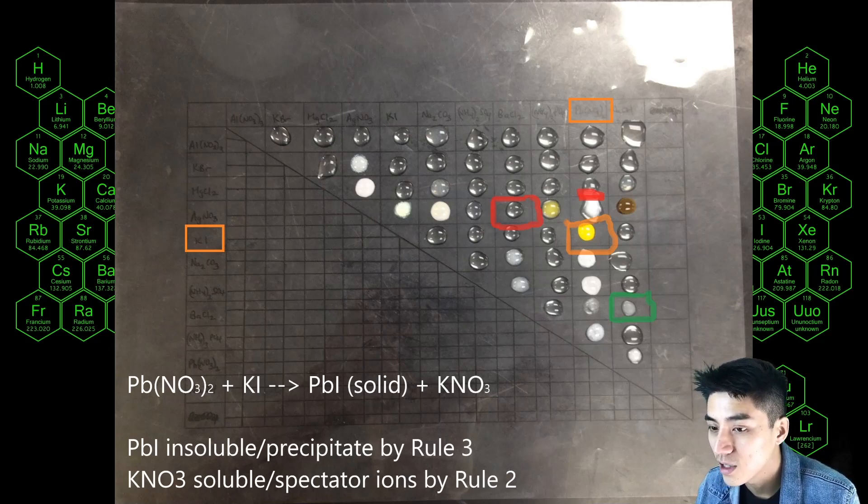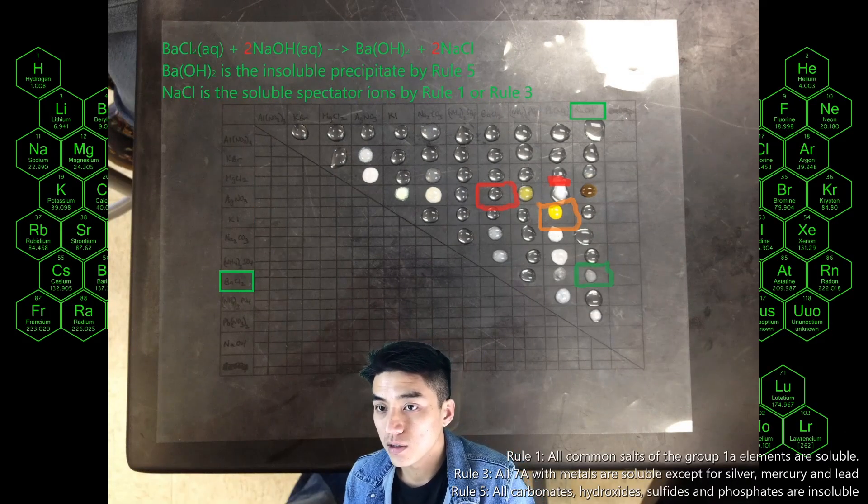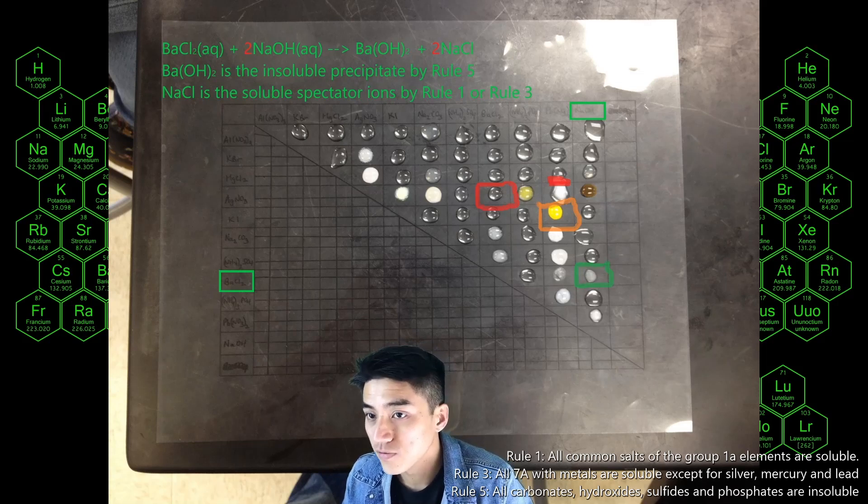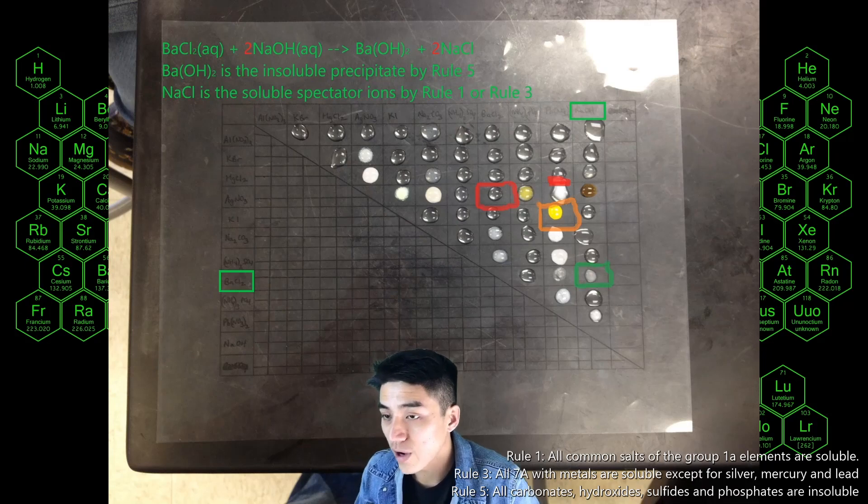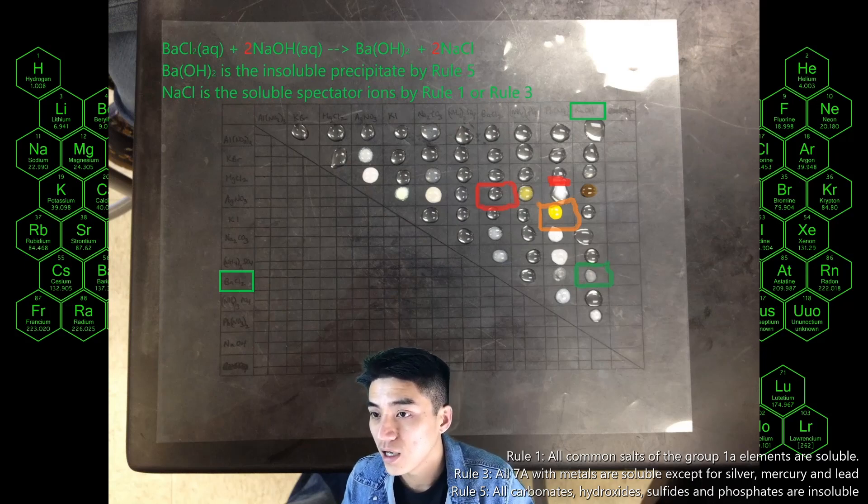I'm going to help you with one more example. So this is the precipitation reaction that I boxed in green—this involves BaCl2 and NaOH. And then on the right hand side there's a double displacement so I wrote that out at the top. So you're going to form Ba(OH)2 which is barium hydroxide and then two molecules of sodium chloride.